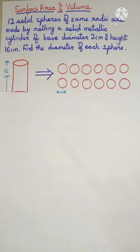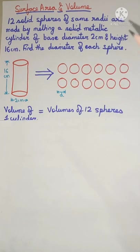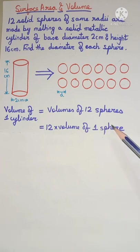The main idea here is that the volume of a single big cylinder is equal to the volume of 12 small spheres. Since each sphere has the same radius, it will be equal to 12 times the volume of each sphere.